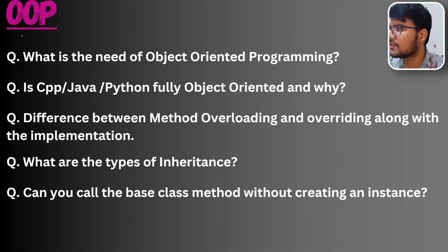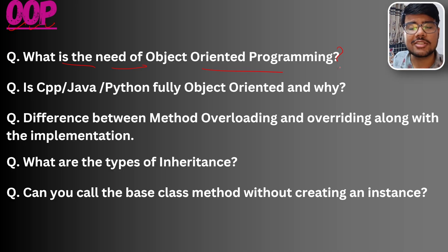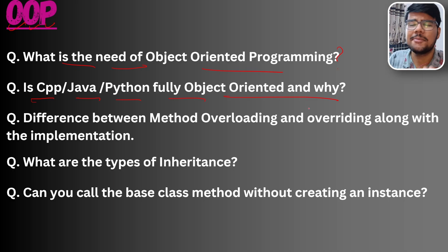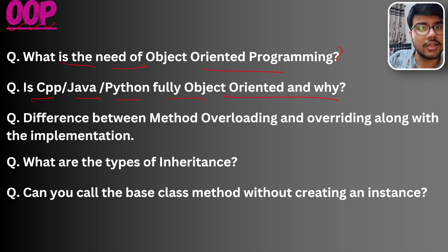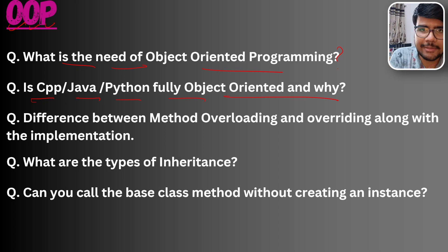Let's begin with OOPs — object oriented programming. Here are a few questions. What is the need of object oriented programming? Many people know the pillars but are not able to define what object oriented programming is. On top of that, is C++, Java, or Python fully object oriented, and why? There are a few criteria for this. In my one-short videos on OOPs and in the Cognizant OOPs questions video, I demonstrated when a language is considered a fully object oriented programming language.